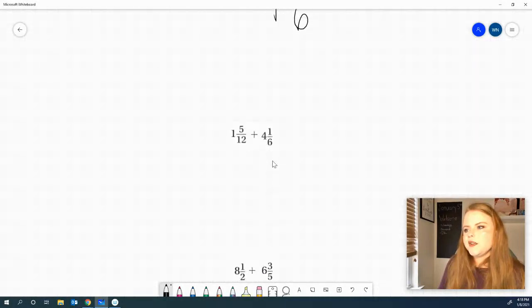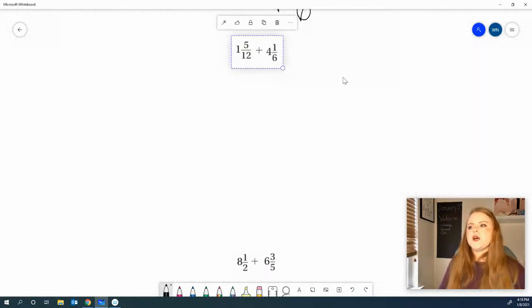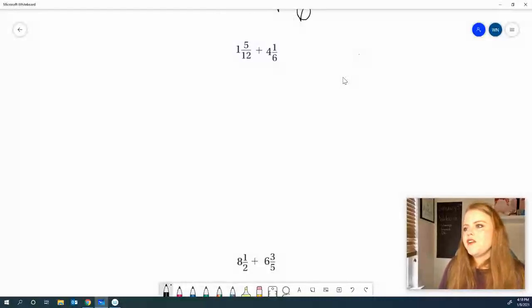Let's go to our next one. 1 and 5/12, plus 4 and 1/6. Go ahead and work it out. All right, for this one, in your brain, you should go ahead and know that 12 is going to be your common denominator, because 6 times 2 is 12.